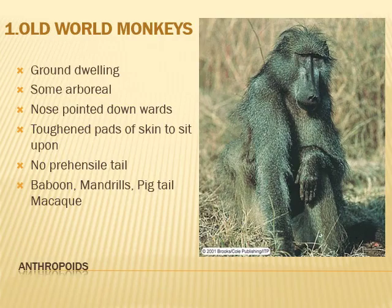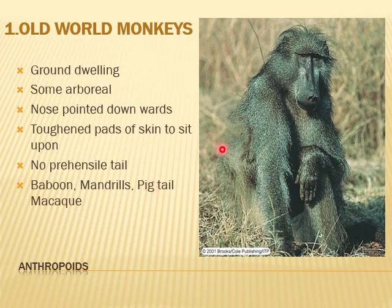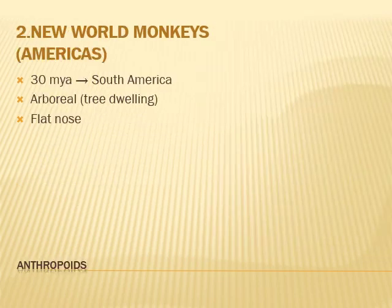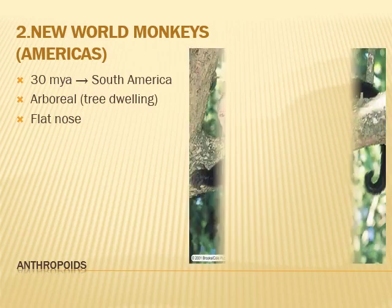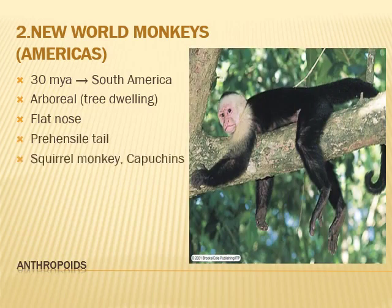Old World monkeys were ground dwellers, though some were arboreal. Their noses point downward. They had thick, toughened pads of skin called ischial pads to sit upon, had no prehensile tail, and included baboon, mandrills, and pig-tailed macaque. New World monkeys appeared 30 million years ago in South America. They were arboreal with flat noses and prehensile tails, including squirrel monkeys and capuchins.